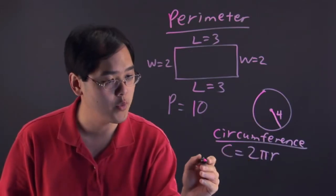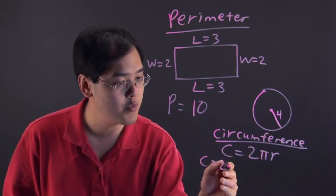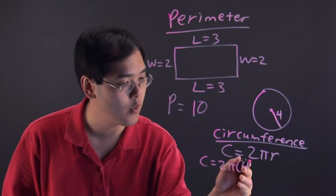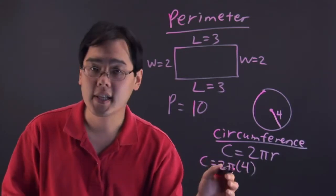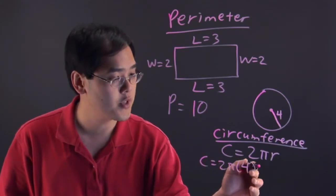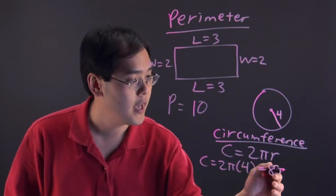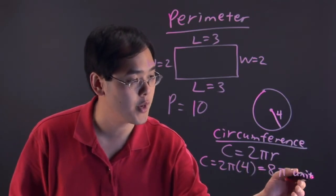Once you know the radius of the circle, you can plug it in. So, to find the circumference of this circle, we have C equals 2 pi times 4, and then we're going to leave the pi as it is, but 2 times 4 is going to be 8. So, we have 8 pi and we'll just call it whatever generic units that we want.